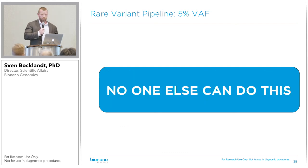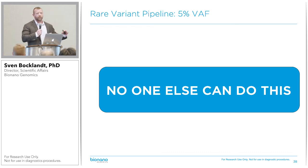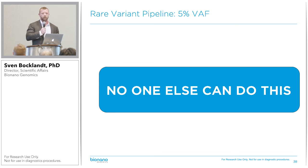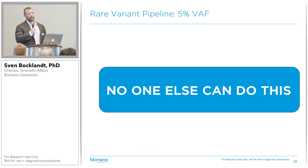No one else can do this — no one comes even close. And keep in mind, you get this type of sensitivity, 400X coverage, for just about $500 per genome. That extra depth of coverage doesn't cost you any more.